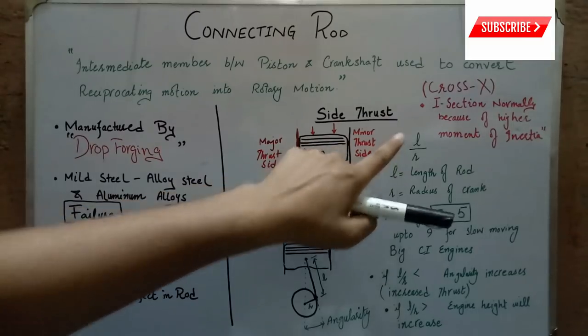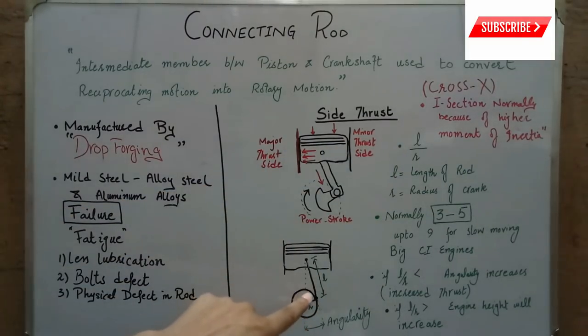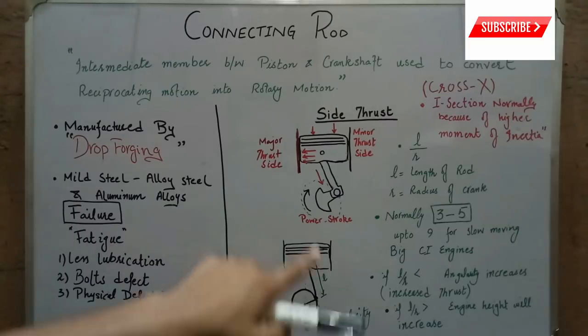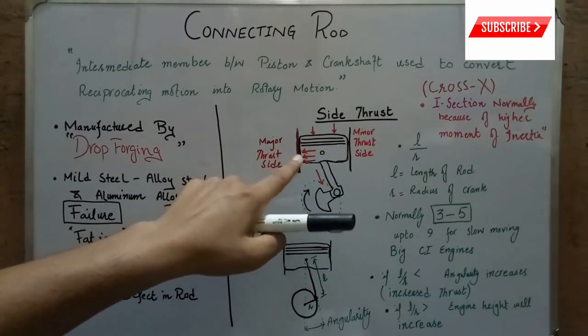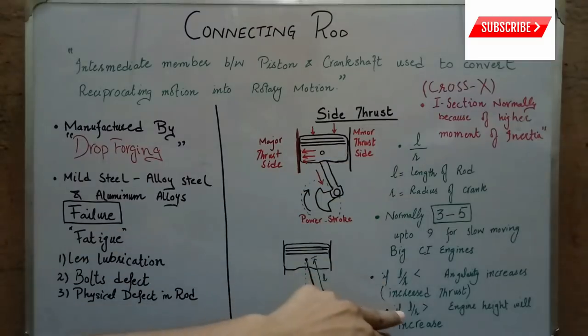Due to decreased L over R ratio, the angularity of the connecting rod will increase and the side thrust will increase. Due to increase in L over R ratio, the engine height will increase.